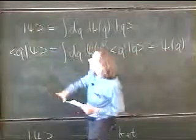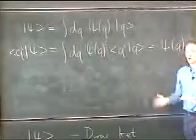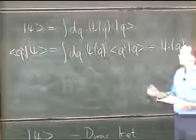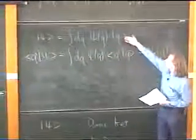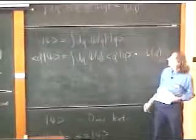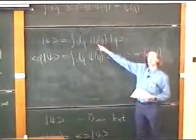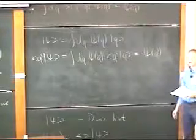This is an arbitrary state. You choose to write it out as a linear combination of some basis. Think of states as vectors. You choose some basis. I choose position eigenstates as my basis. And these are the components of the vector when you write it in that basis.